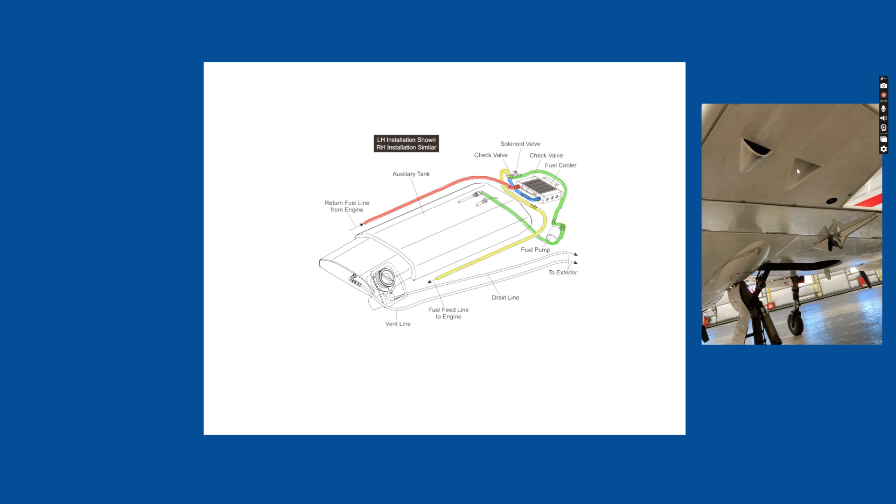This is a picture on the bottom aft part of the engine nacelle. The fuel cooler is up in here. So there's this little duct that brings cooling air up into flow of the fuel cooler to cool it. And then this is an outlet for the air. And then there's a sump for the aux tank as well located right here.